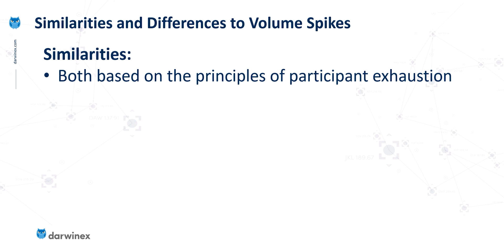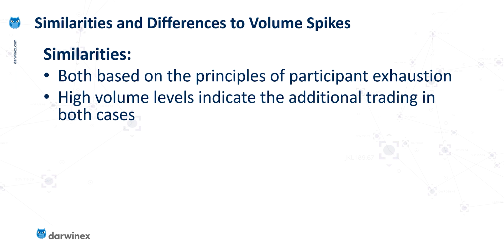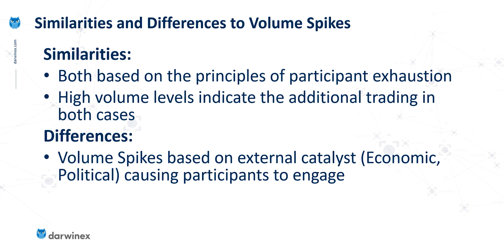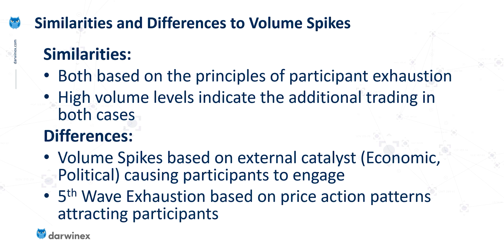There are a number of similarities to volume spikes that we looked at last time. They're both based on the principles of participant exhaustion — getting to a point where there's no one else left to go in in order to continue with the price move, and when that happens we see a reversal. It's also similar in respect of the high volume levels that indicate the additional trading in both cases. But there are differences also. Volume spikes tend to be based on some form of external catalyst, be that an economic news release or a political event, and it's that which causes participants to engage in that price move. Whereas with fifth wave exhaustions, this doesn't need a catalyst — this is simply based on the price action pattern attracting those final participants in the move.